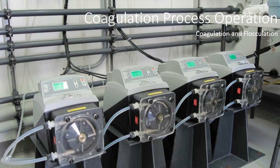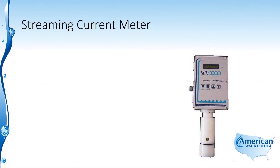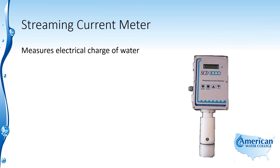We're going to look at some operational controls and things that you can do to operate the coagulation and flocculation system. The first piece of equipment we'll look at is the streaming current meter. The streaming current meter measures the electrical charge of the water — this is the zeta potential that we were talking about.